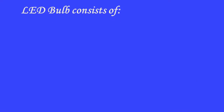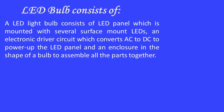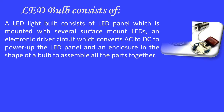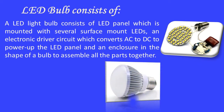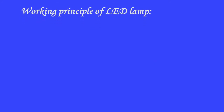An LED bulb consists of an LED panel mounted with several surface-mount LEDs, an electronic driver circuit which converts AC to DC to power up the LED panel, and an enclosure in the shape of a bulb to assemble all the parts together.